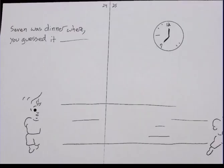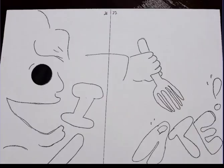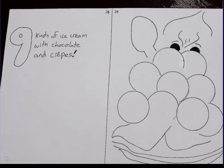Seven was dinner, where, you guessed it, I ate. Nine kinds of ice cream with chocolate and crepes.